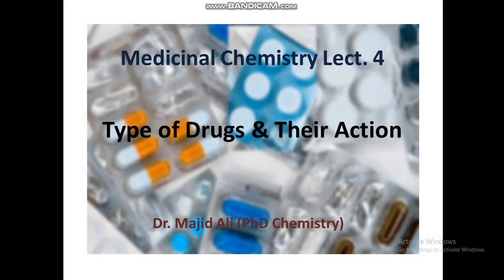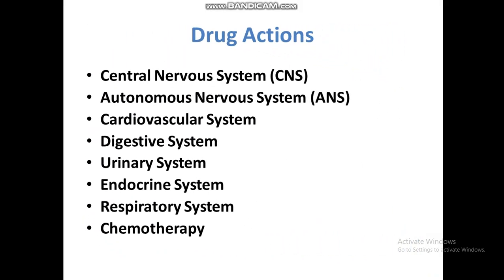Assalamu alaikum. Today is our fourth lecture on medicinal chemistry, in which we study different types of drugs and their action. There are different types of drugs that act on different parts of the body. Here we will discuss drugs that act on the central nervous system, autonomous nervous system, cardiovascular system, digestive system, urinary system, endocrine system, respiratory system, and chemotherapeutic drugs.